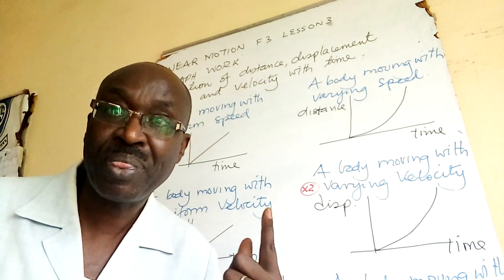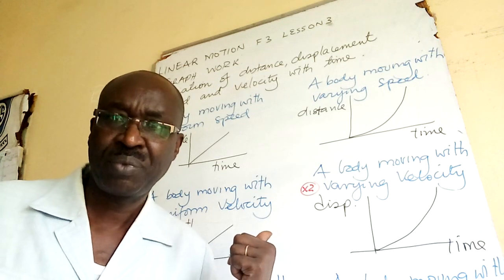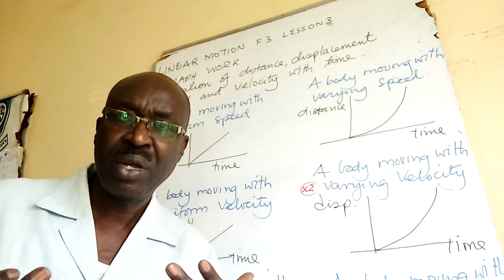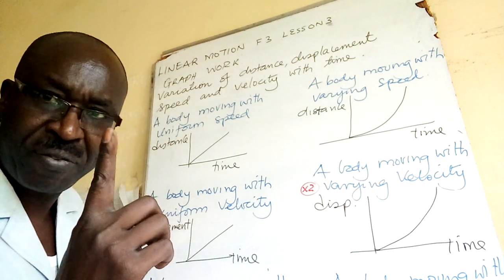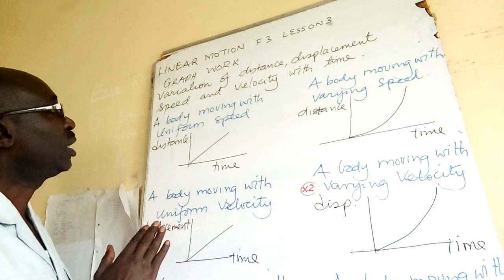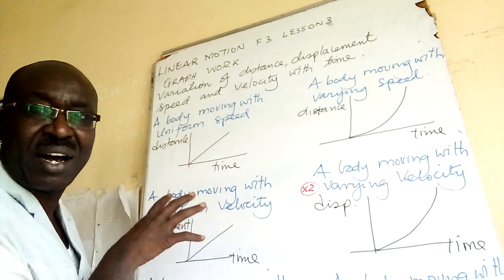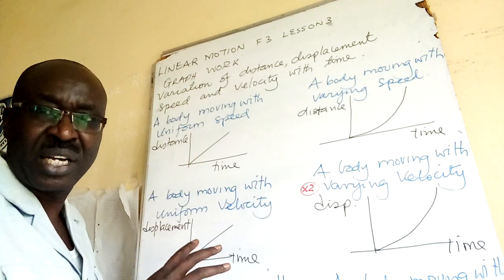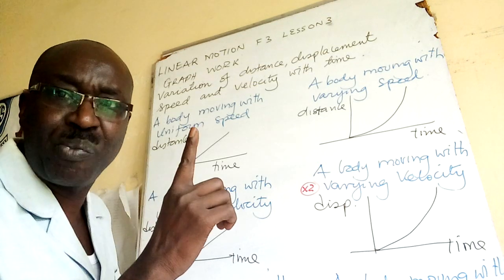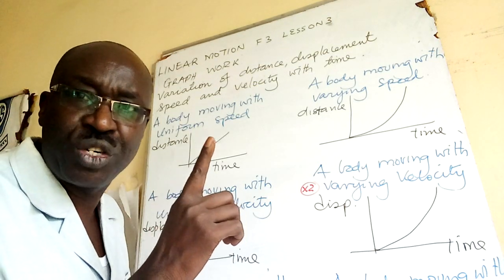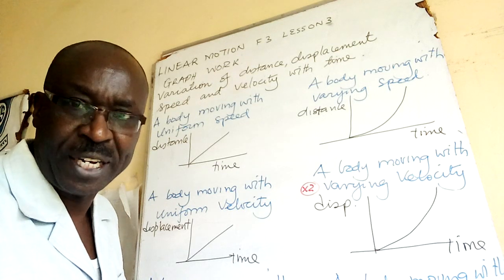That relationship is the core. Now we look at graph work. What I want you to understand today is that these graphs can communicate to us the type of motion which was executed by a given body.